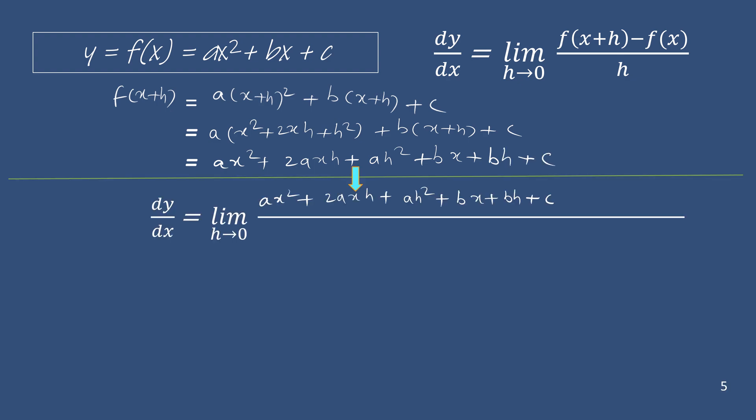Now substituting in the formula for the derivative, we have limit h tends to 0, f of x plus h, and minus f(x) means minus ax square minus bx minus c. Each term of f(x) is placed with sign changed. And this whole divided by h.